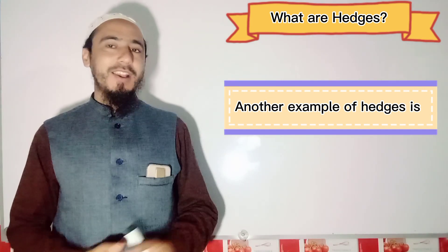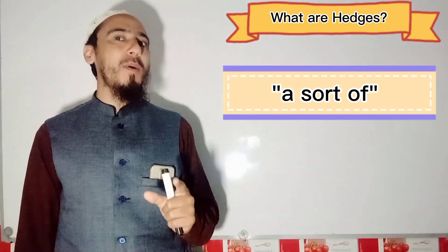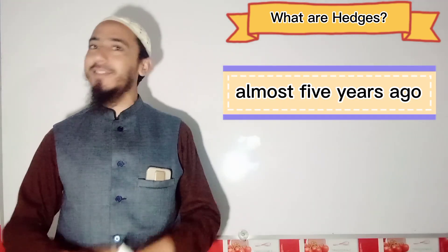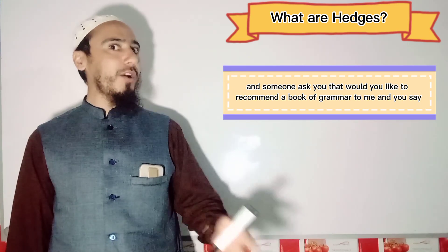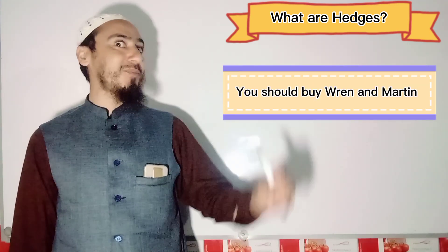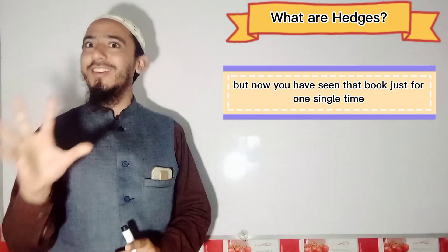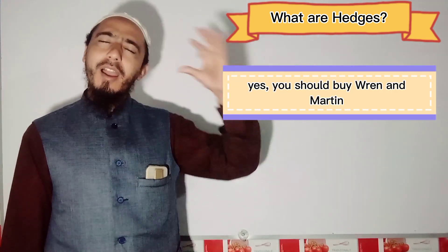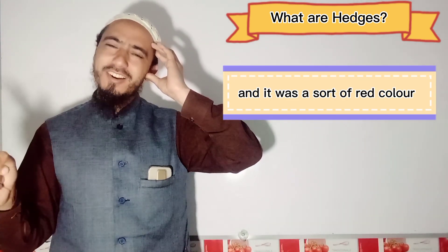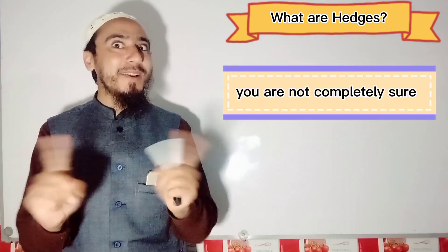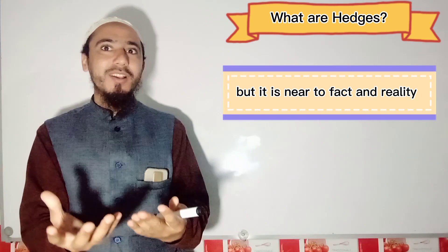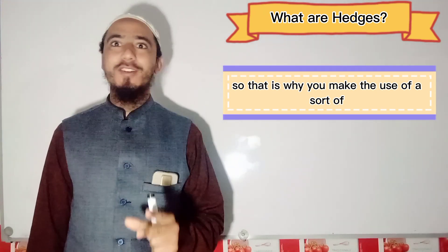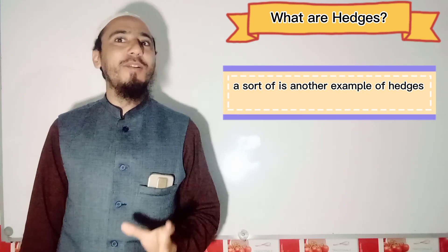Another example of hedges is 'sort of', which means a kind of. For example, you saw a book almost five years ago and someone asked you to recommend a grammar book. You said they should buy Quirk and Greenbaum, and it was a sort of red color. When you say 'sort of', you are not completely sure, but it is near to fact or reality, but not entirely. That's why you make use of 'sort of'. So 'sort of' is another example of hedges.